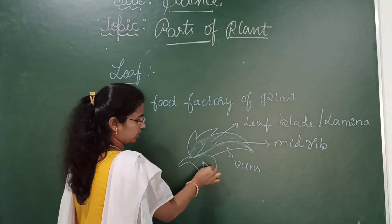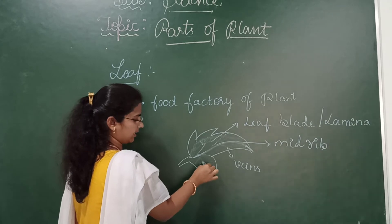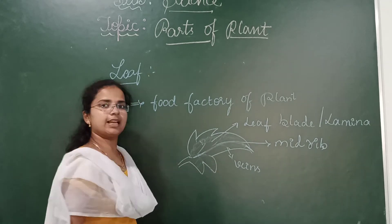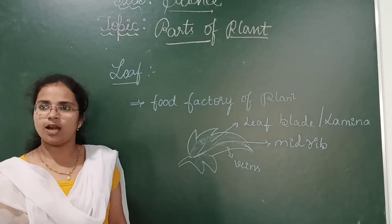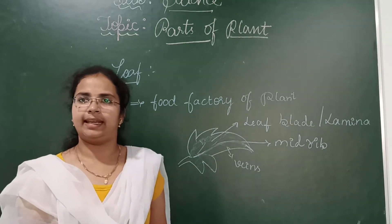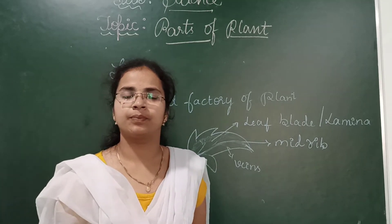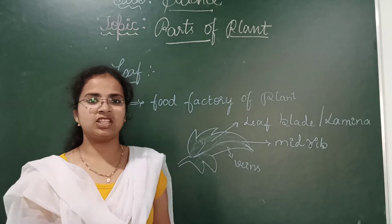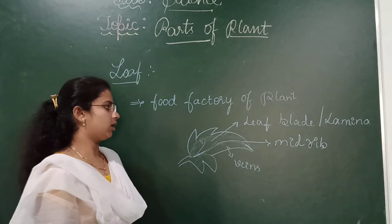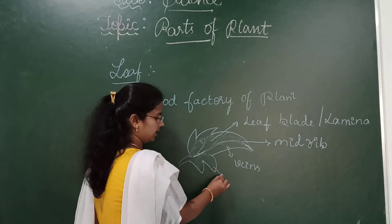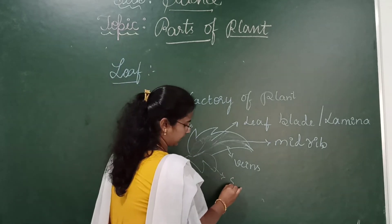The tiny pores present in the leaf, which are not seen by our naked eyes, are called stomata.